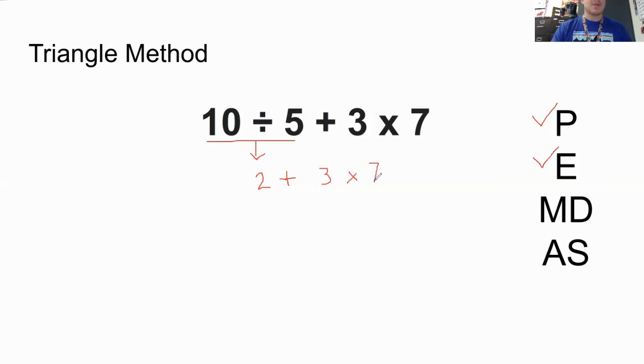Now that the rest of the equation or the expression is written, I'm going to check again. Is there any more multiplication and division? I do have multiplication. So I'm going to do this step next. I'm going to do 3 × 7. And 3 × 7 would get us 21. Before I do any more math, I'm going to rewrite the rest of my expression. Then I check, do I have any more multiplication or division? Nope. We do not have any more multiplication or division. So the last step is addition. So we're going to add these two numbers together to get us 23.